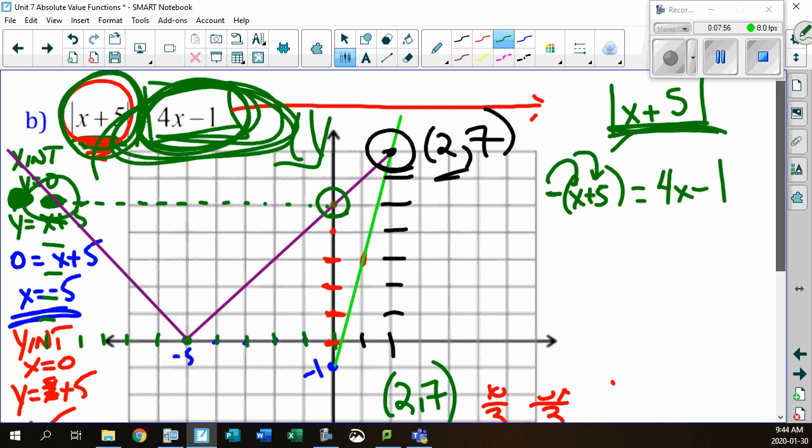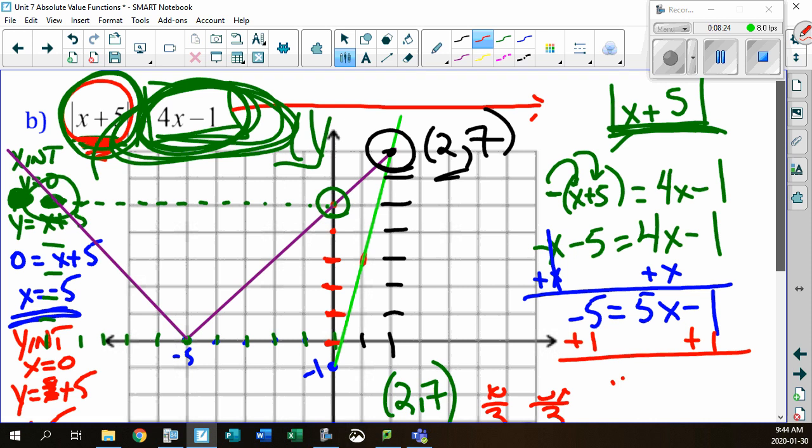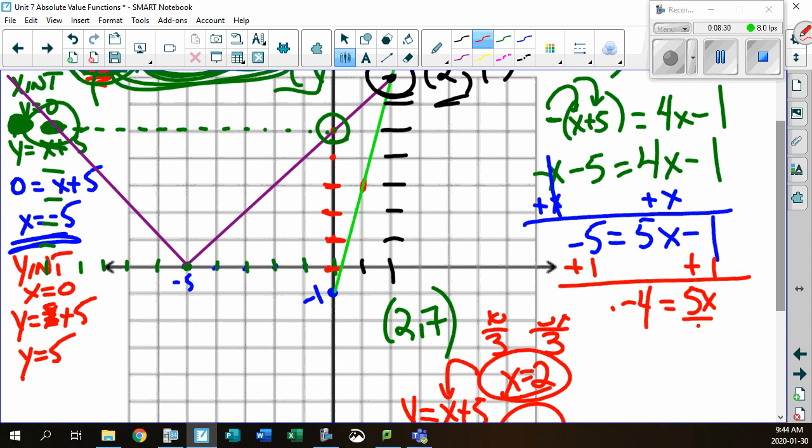Now, distribute. Minus x. This is why we need brackets around that so that we can actually see the distribution of this. Now, check this out. Let's combine like terms. I'm going to add x to both sides. I have minus 5 equaling to 5x minus 1. I'm going to add my 1 to both sides. So, now I have minus 4 equaling to 5x. And now I'm going to divide by 5. And x equals to minus 4 fifths.